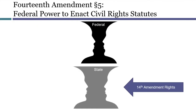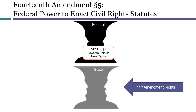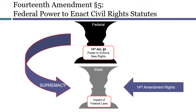This diagram illustrates how the new federal power expanded the authority of Congress and potentially reduced the authority of states. Section 5 created a new enumerated power, expanding the scope of Congress's enumerated powers. As with all laws passed by Congress, these laws would be supreme, and this meant that states were now limited in their ability to enact conflicting laws.